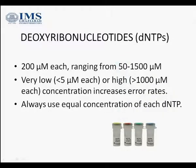Coming to the dNTPs, that is deoxyribonucleotides, the concentration for these dNTPs has to be in a range of 50 to 1500 micromolar, but a very low concentration and a very high concentration is not good. So we need to have an optimum concentration, and as this figure shows, all four dNTPs have to be in equal concentration to have a good PCR reaction.